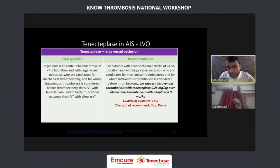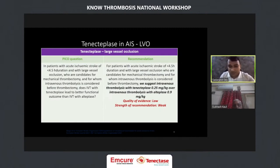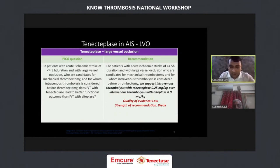Regarding IV thrombolysis, we opted for tenecteplase because the family was still not decided about endovascular thrombectomy. If we saw significant diffusion-perfusion mismatch on MRI, we would go ahead with IV thrombolysis. We opted for tenecteplase because the ESO guideline states that in cases of large vessel occlusion, tenecteplase is preferred over alteplase, and the Canadian guideline also recommends it as an alternative to alteplase for all stroke types.